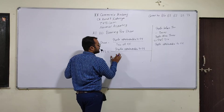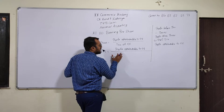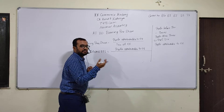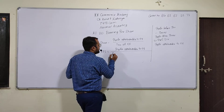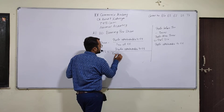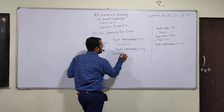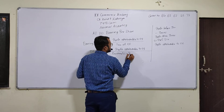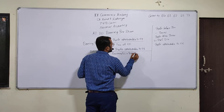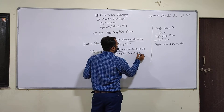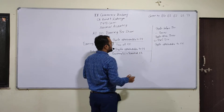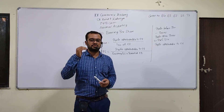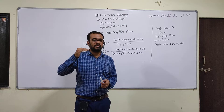That is diluted EPS. The earnings are considered including potential equity shares. So the denominator is the base of existing equity shares already issued, plus potential equity shares. Potential equity shares — if all instruments can be converted into equity, then how many shares can be converted? That gives potential equity shares. Then there will be EPS, which is diluted EPS.